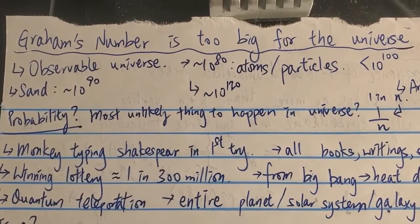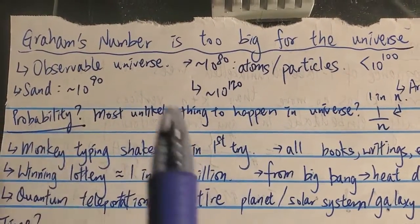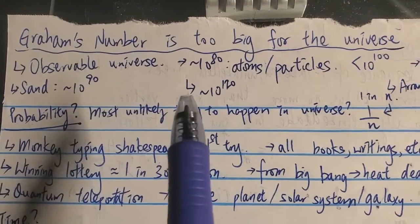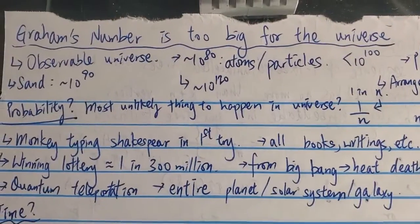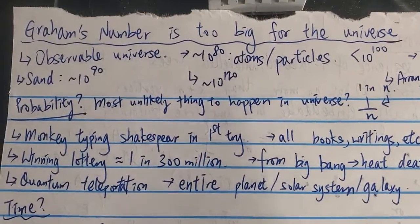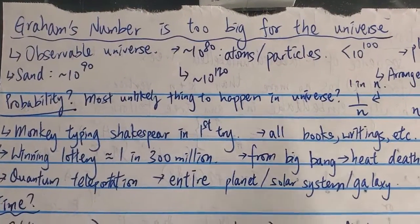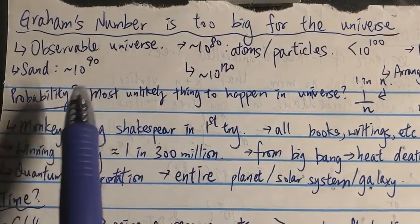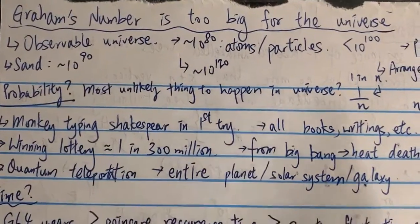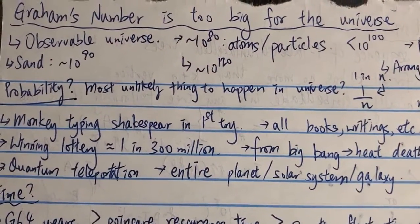Hi everyone. This video is about Graham's number being too big for the universe. We are referring to the observable universe of course.